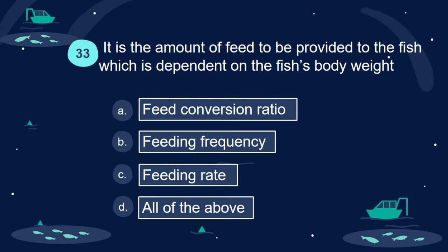Question 33. It is the amount of feed to be provided to the fish, which is dependent on the fish's body weight: A. Feed conversion ratio. B. Feeding frequency. C. Feeding rate. D. All of the above.